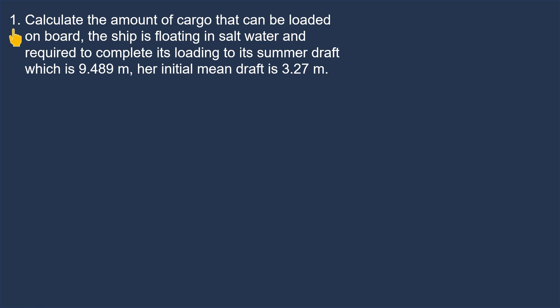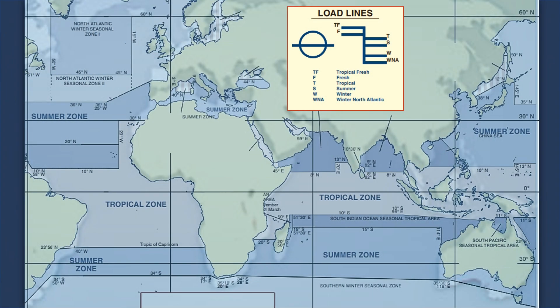For our first example, calculate the amount of cargo that can be loaded on board. The ship is floating in salt water and required to complete its loading to its summer draft of 9.489 m. Her initial mean draft is 3.27 m. In this problem, let us disregard the consumable weights and constant — it will be discussed in the next example. Let us assume that the ship only sails within the summer zone area.